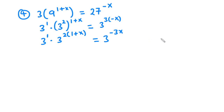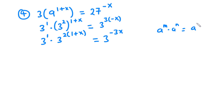Now in indices, whenever you want to multiply common bases, you want to add their exponents. So a exponent m times a exponent n is equal to a exponent m plus n.